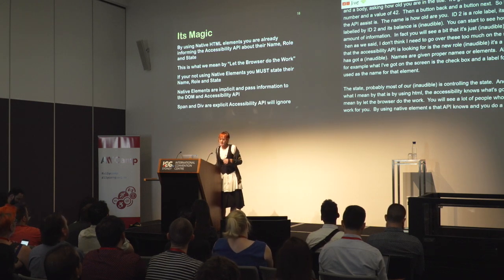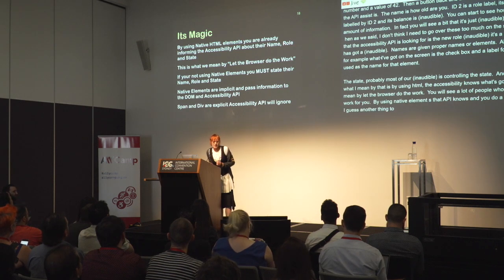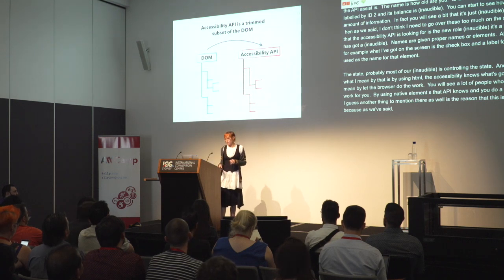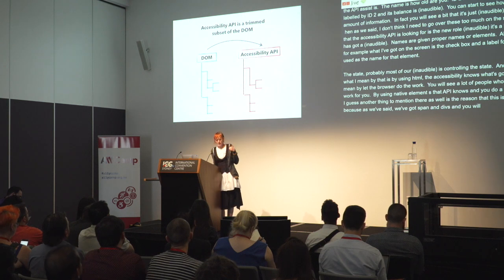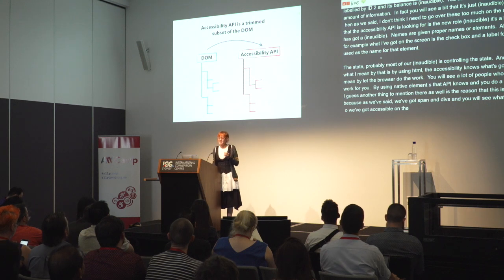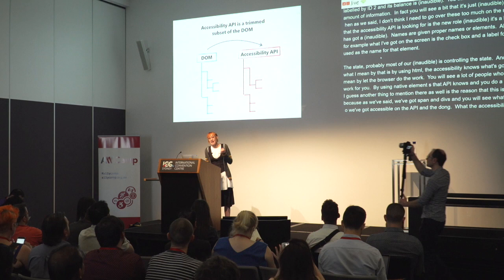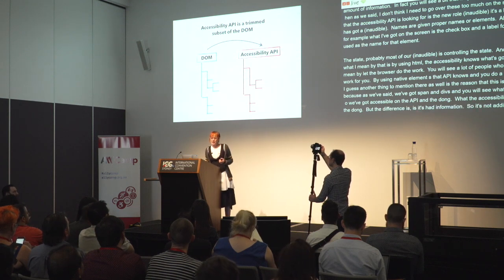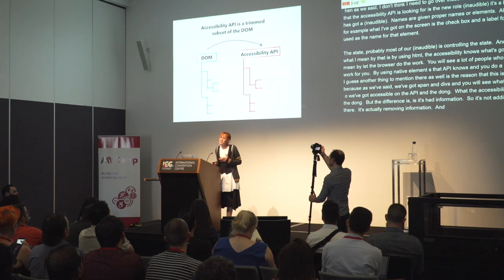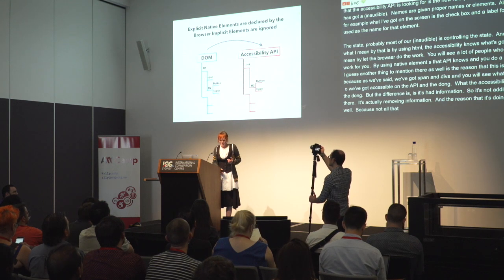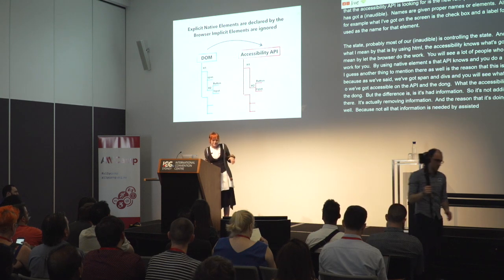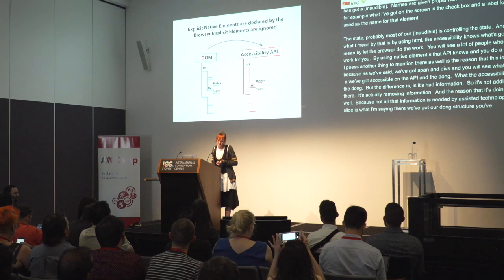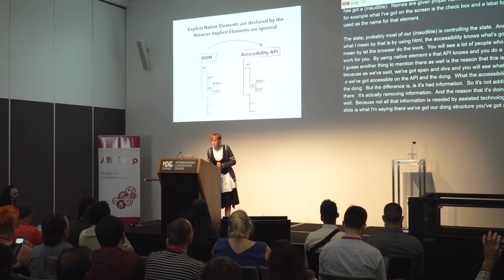Spans and divs are actually ignored by the accessibility API. On screen I've got a comparison of the accessibility API versus the DOM. The accessibility API is a subset of the DOM, but with information removed — it's leaner because not all information is needed by assistive technology. In our DOM structure, we've got an H1, a span, an H2, a button, and an input. In the accessibility API, the H1, H2, button, and input come across, but the span doesn't.